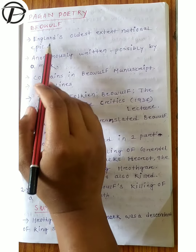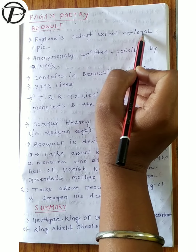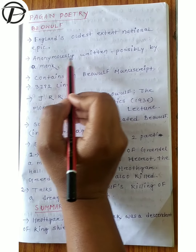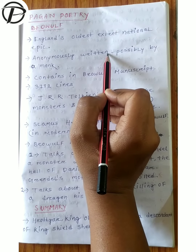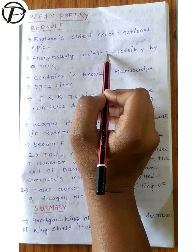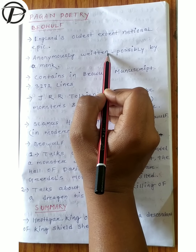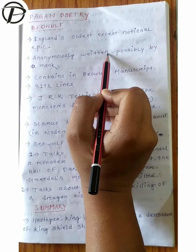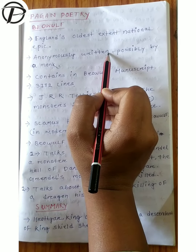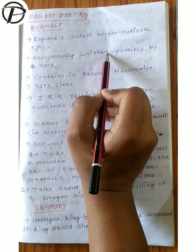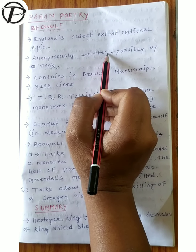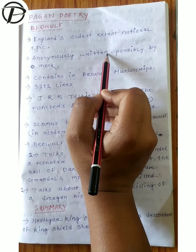Beowulf is England's oldest extant national epic and it was anonymously written. As I mentioned in the Anglo-Saxon period, there was the anonymity of writing. Works were not published with an author's name, so it was not known who had written them.